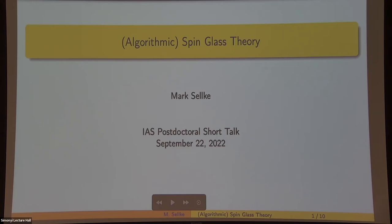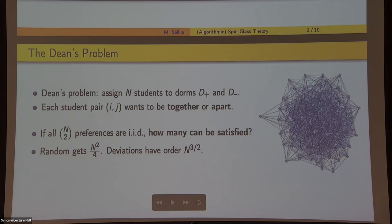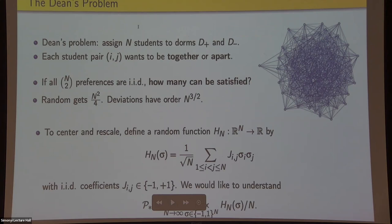So let's start with a combinatorial question called the Dean's problem. In the Dean's problem, I have n students, and I'd like to assign them to two dorms, which I'll call plus and minus. Each student pair is either friends or enemies, so they either want to be in the same dorm or they don't.